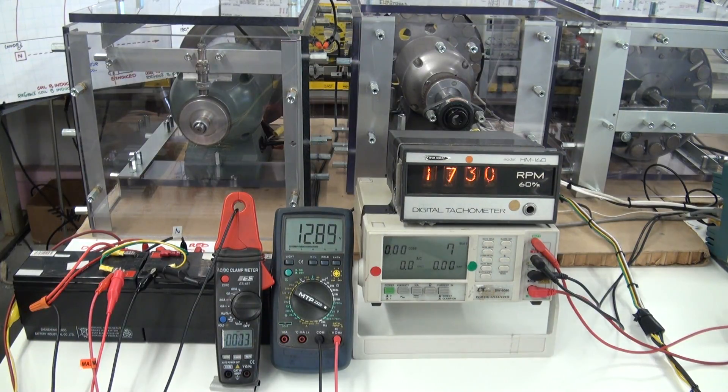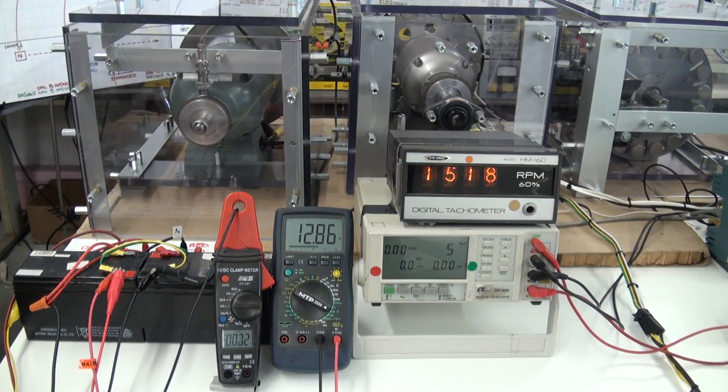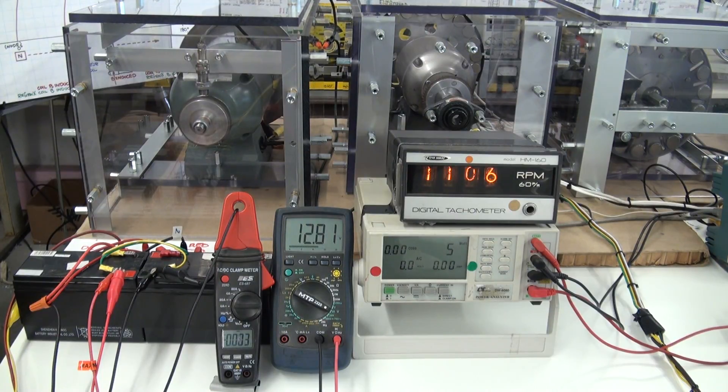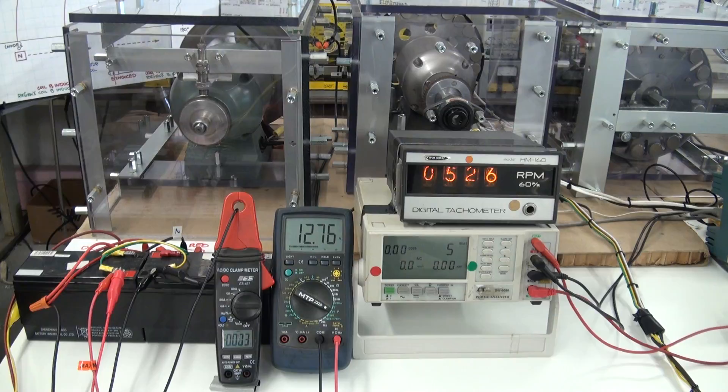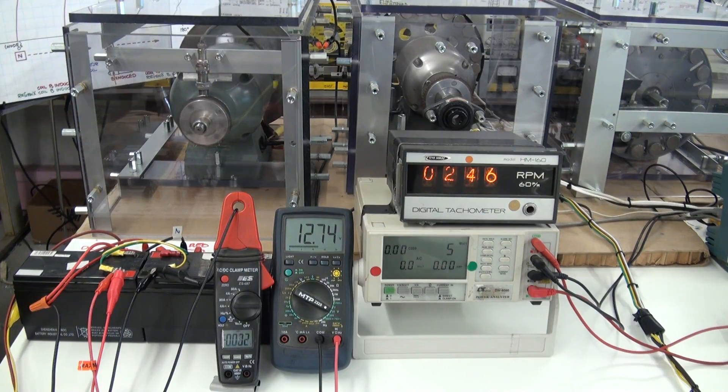So the regenerative acceleration coil accelerates the system and recharges the batteries above the generator coil's critical minimum frequency. And below the critical minimum frequency, the Regenexx generator coil operates as a conventional regenerative braking coil and decelerates the system or decelerates the EV while it's recharging the EV's batteries. Enjoy!